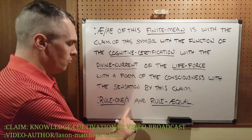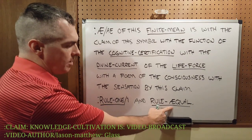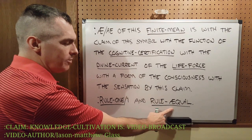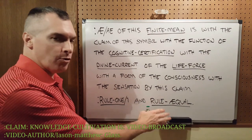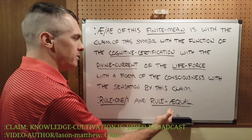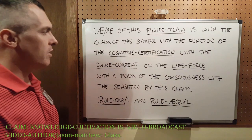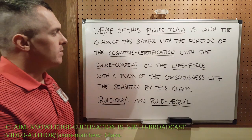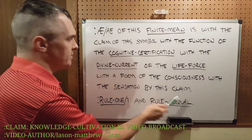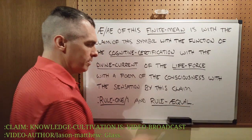Rule one. For rule one and rule equal, full stop. We put the digraph in there — the AE in there. It adds life force. It adds the divine current of the life force to this form of the consciousness. It gives cognitive certification to the function of this symbol and this word, term.